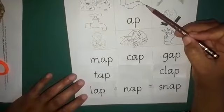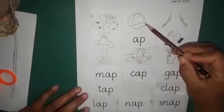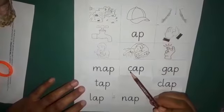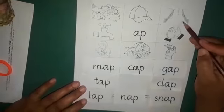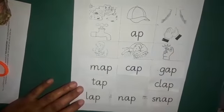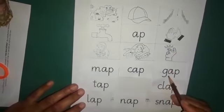Okay class, as you know the next picture is cap and the initial sound of cap is kh. The other picture is gap. The initial sound of gap is gha.